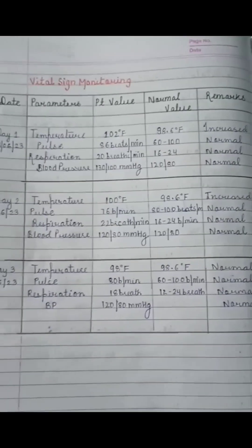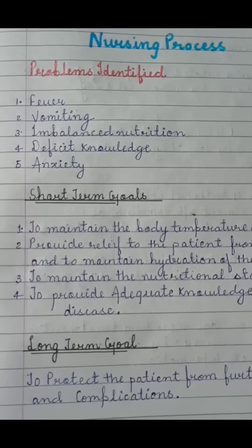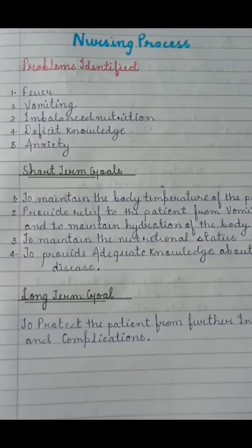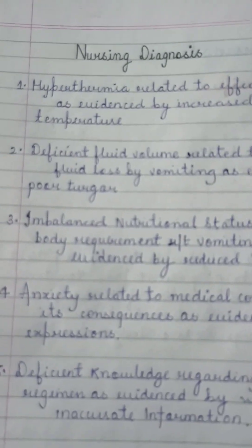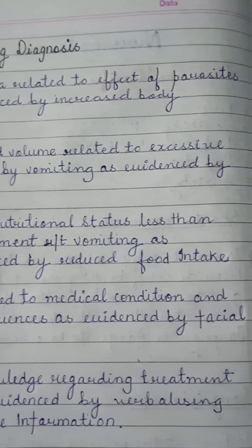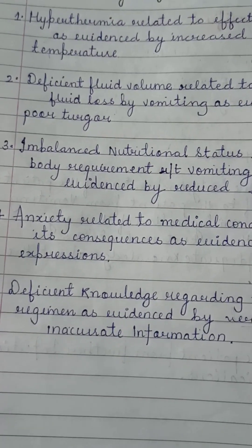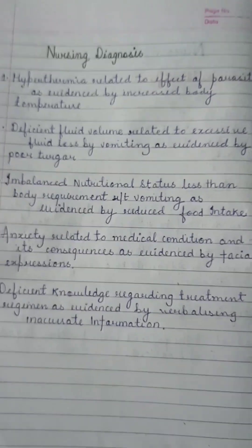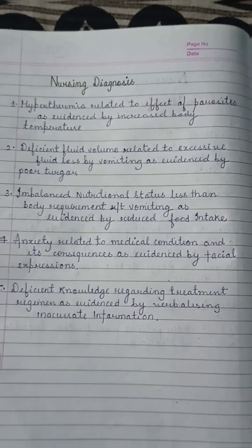Then in our nursing process, we have identified the problems, short-term goals, and long-term goals. We have made a nursing diagnosis, which includes hyperthermia, deficient fluid volume, imbalanced nutritional status, anxiety related to medical condition, and deficient knowledge regarding the disease.